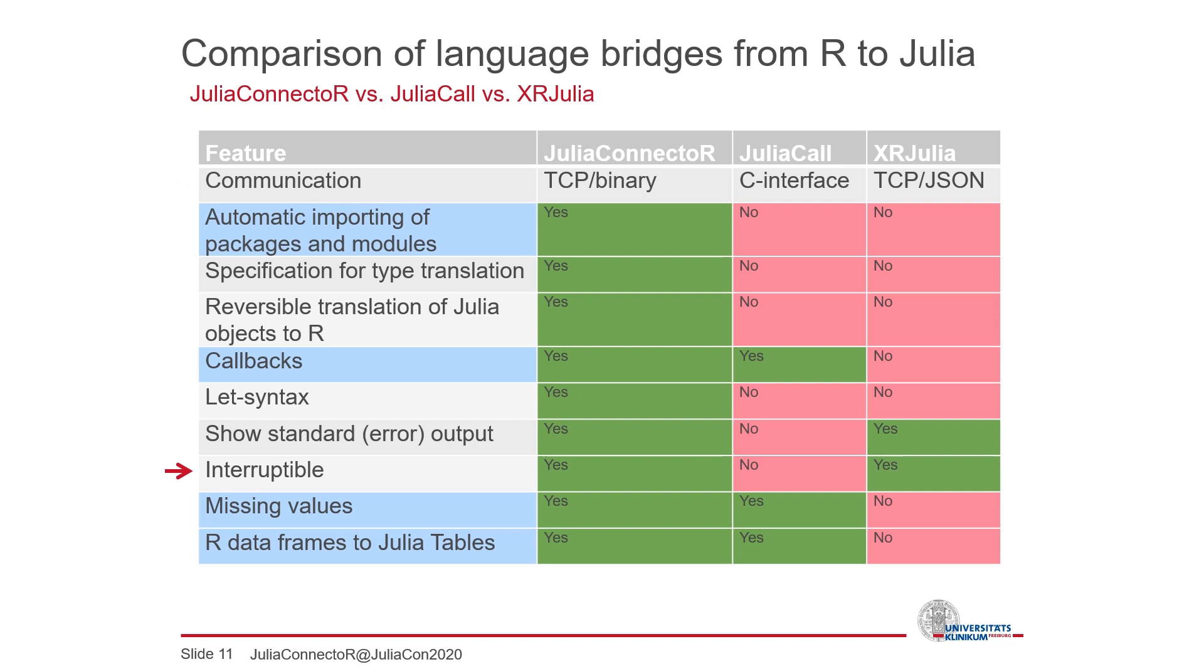Another advantage of using TCP is that it allows to implement features for interactive use which are not available in JuliaCall. Interrupting long-running calls is possible via the JuliaConnector in a clean way with this. This is especially important for deep learning. If you experiment with some deep learning model, for example, you may change your mind if a call takes too long and would like to interrupt it. Showing standard output and standard error output, including warnings, is also an important feature for the interactive use.